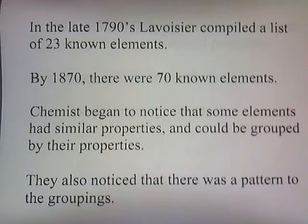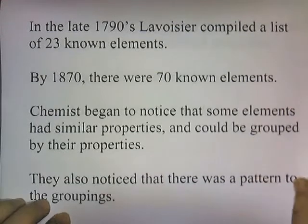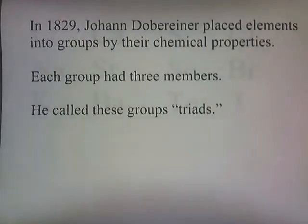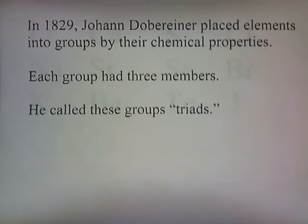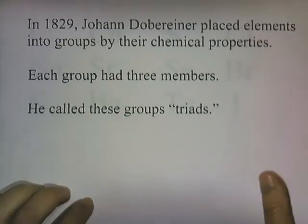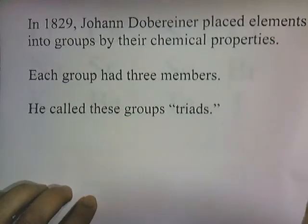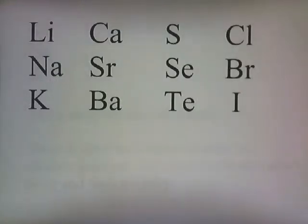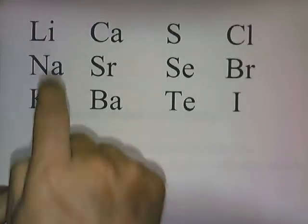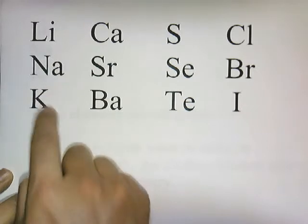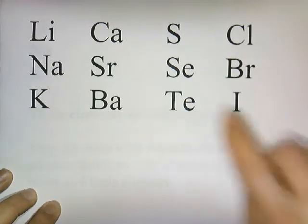They also noticed that there was a pattern to the groupings. In 1829, Johann Döbereiner placed elements into groups by their chemical properties. Each group had three members. He called these groups triads. Here are some of the triads he created: lithium, sodium, and potassium form one triad.